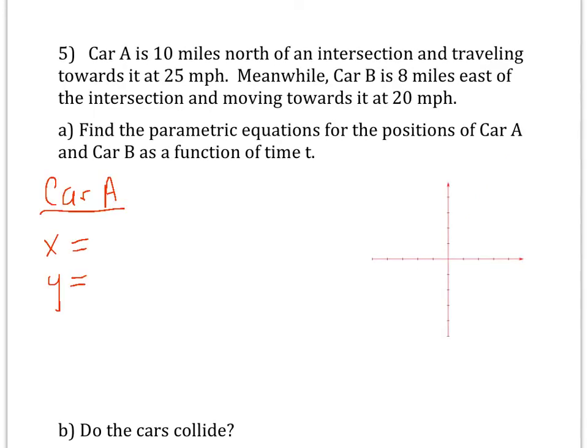Look at this problem. You got two cars that are approaching intersection. Car A is 10 miles north, and it's traveling south at 25 miles per hour. So car A starts off north. It's going to go south 25 miles per hour. And so the question is, what would be the parametric equations for car A? See if you can do that. Well, notice the x coordinate is always 0. And then the y coordinate starts out to be 10 miles. But if you're traveling 25 miles per hour, if the velocity is 25, then you would subtract 25t from 10.